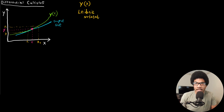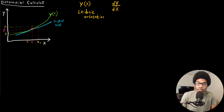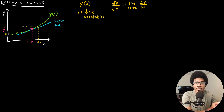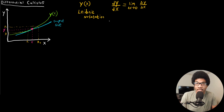Leibniz notation, named after Leibniz from the 1600s, uses DY over DX — the change in Y over DX. This is always read as "the derivative of Y with respect to X." If you remember how we deal with limits, we're taking the limit as the change in X goes to zero of delta Y over delta X. This is a really useful definition because it means that if we can define a function for Y, we're essentially looking at the slope — rise over run, DY over DX. You can plot a function in two dimensions, get its derivative, and interpret the consequences of that derivative function.